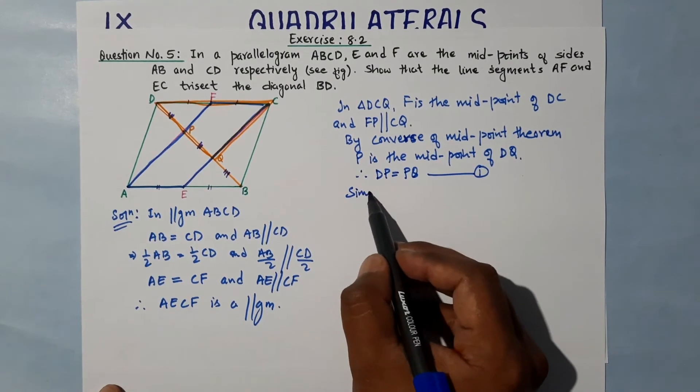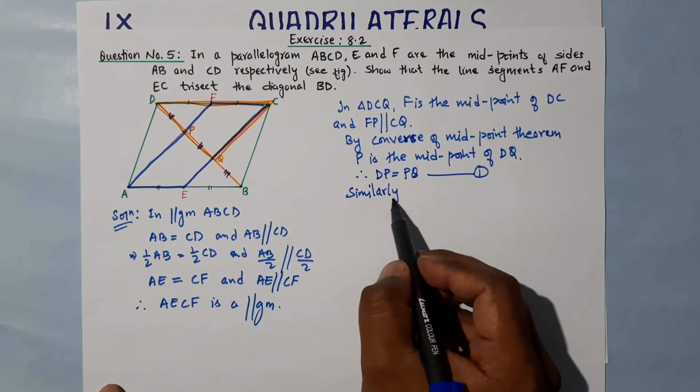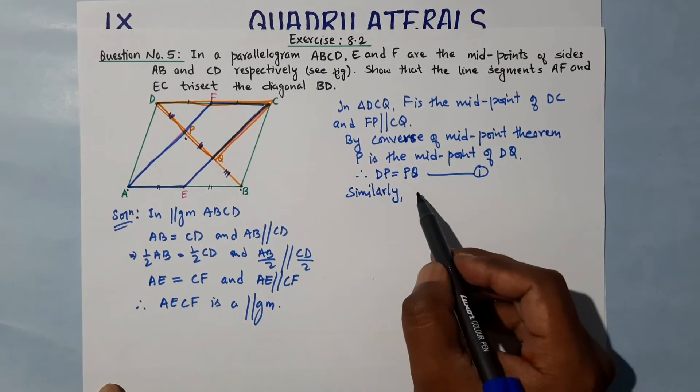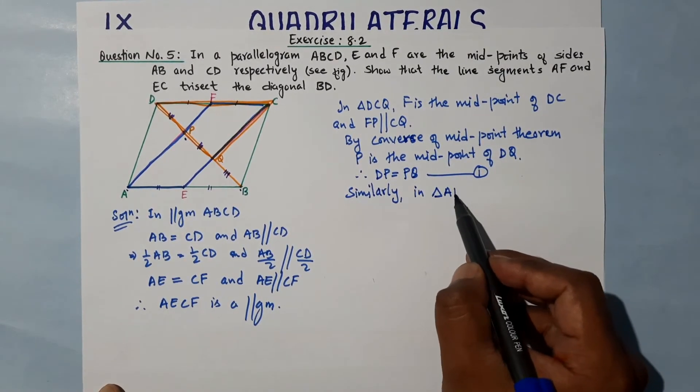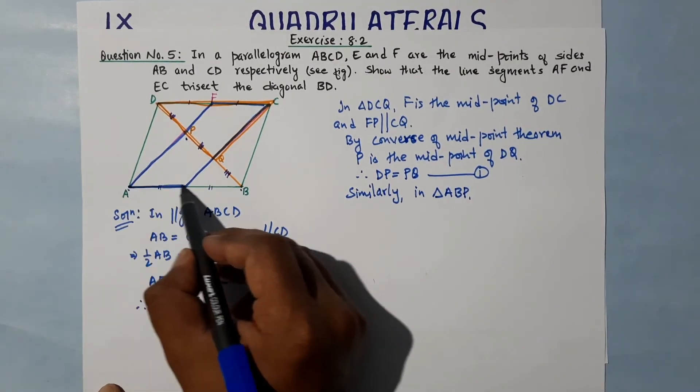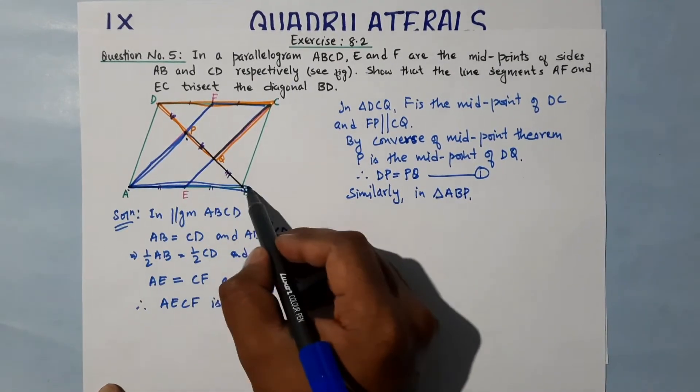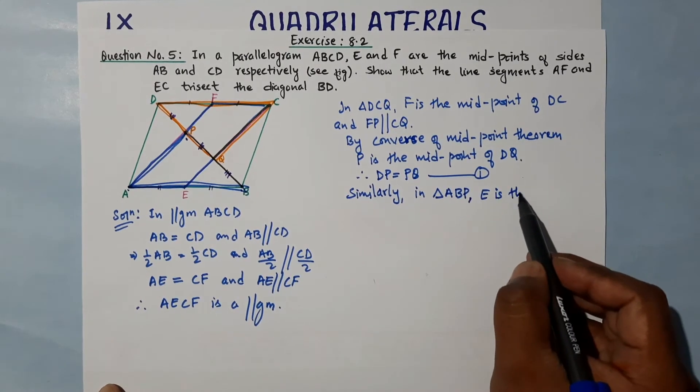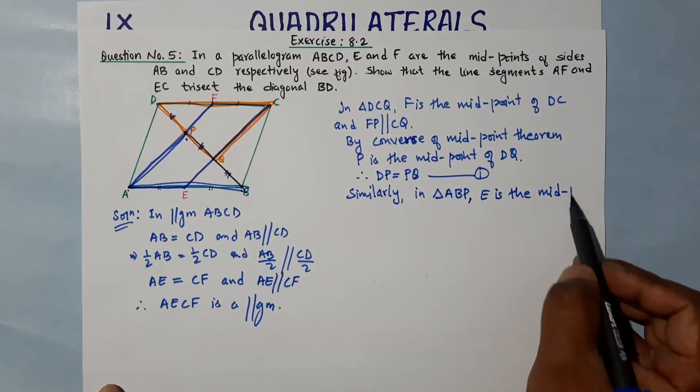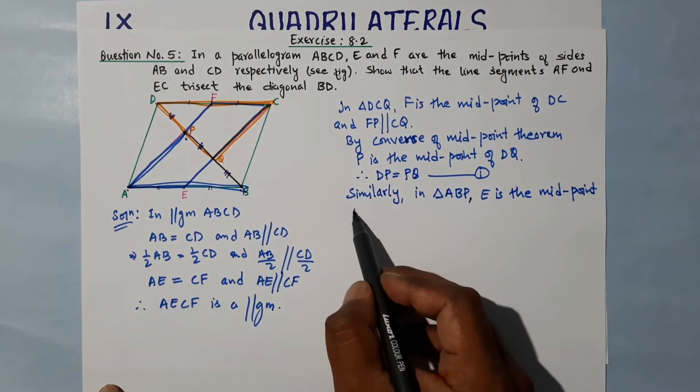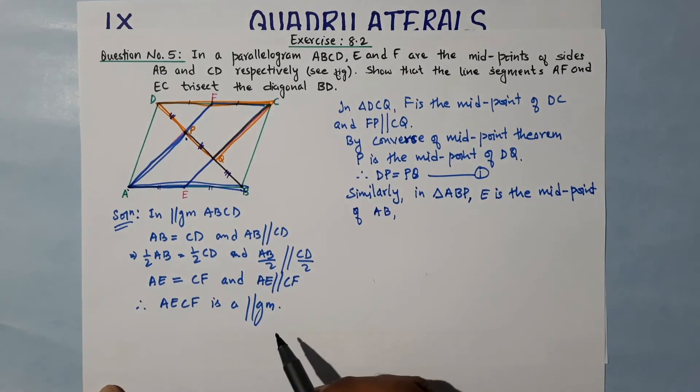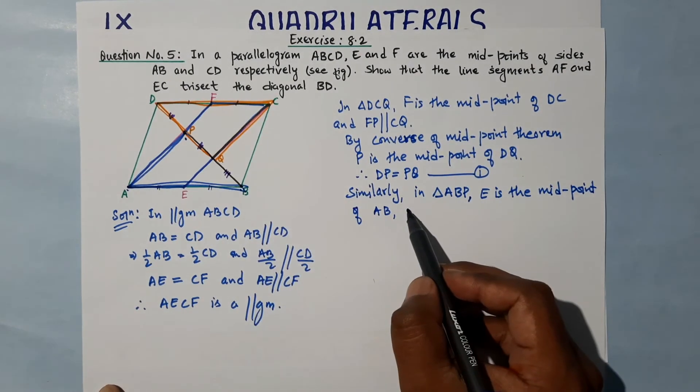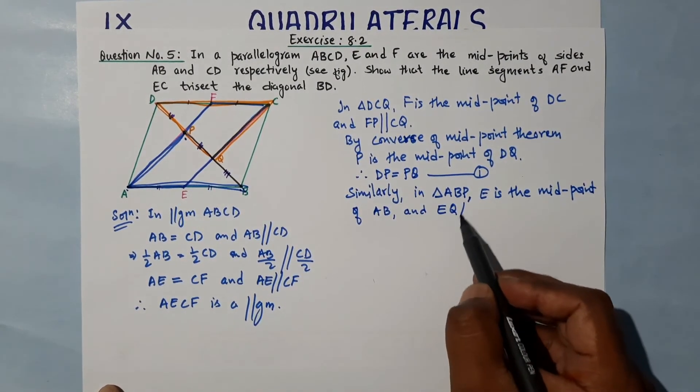So P is the midpoint of DQ. Therefore, DP is equal to PQ - this is our equation 1. Similarly, in triangle ABP, this triangle, E is the midpoint of AB...